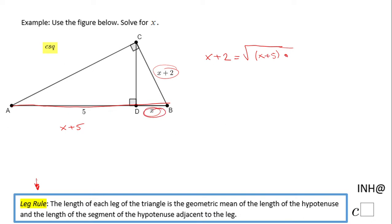How are we going to solve this? Since we have a radical, a square root, we want to raise to the second power both sides. We're going to have here x plus two squared equals x plus five, the quantity x plus five, times x.